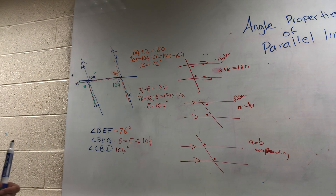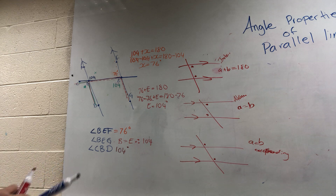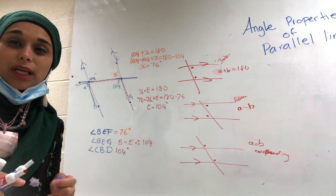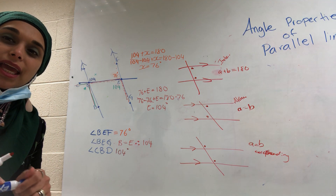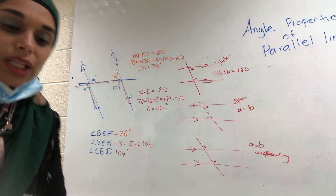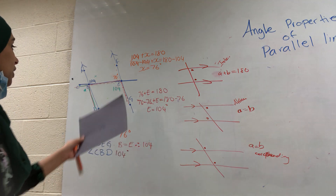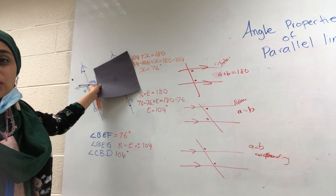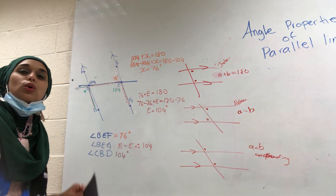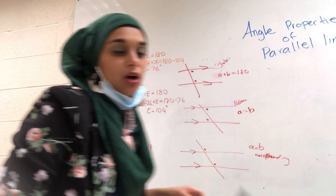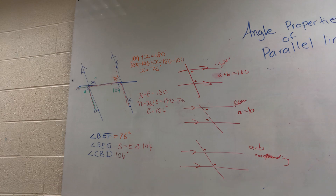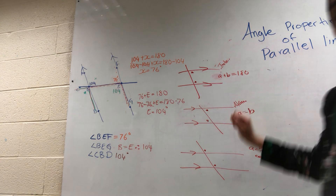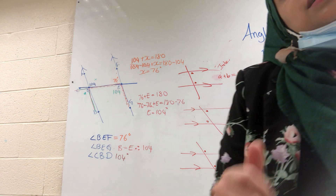So again, a lot of vocabulary here. With this topic, you really have to use visualization and try to see the angles. Sometimes it helps to use a piece of paper to cover up part of the diagram so you can focus on the angle you're looking for. I hope that helps — go back and review all of the vocabulary so that you are successful.